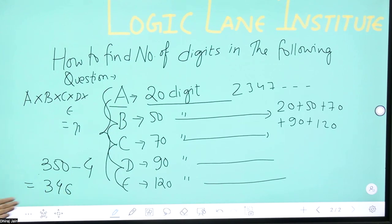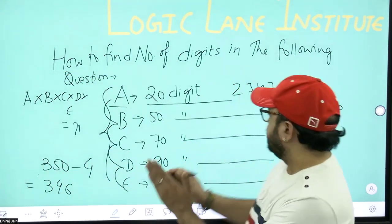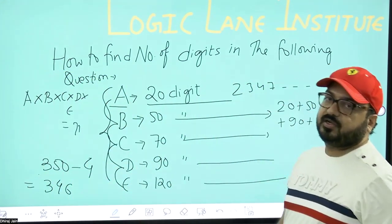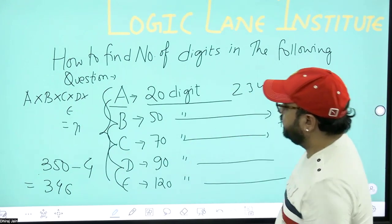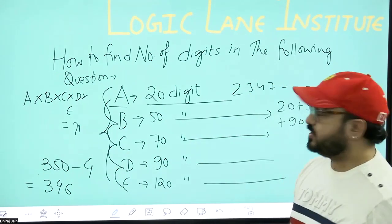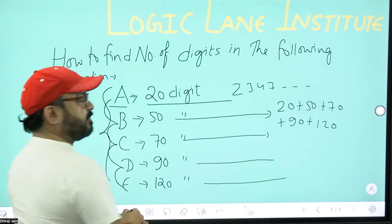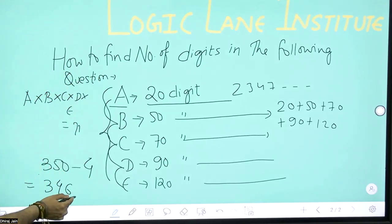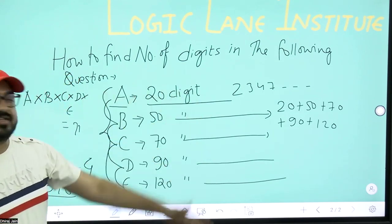346, yaani ki approximately isse ka joa ansar hai ga, agar kya 20 digits, 150, 50 digits, 70 digits, 90 digits, or 120 digits se multiply dharane pas, to isse ka ansar aapko approximately 346 digit ka ya ansar ho raha.